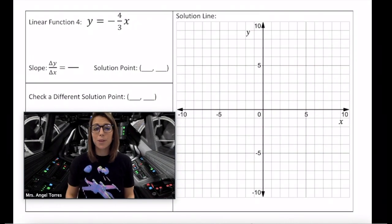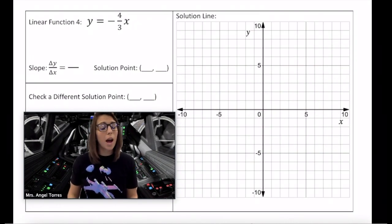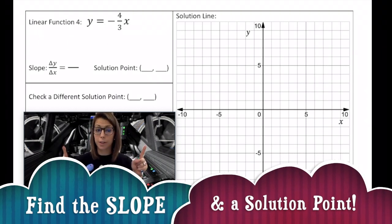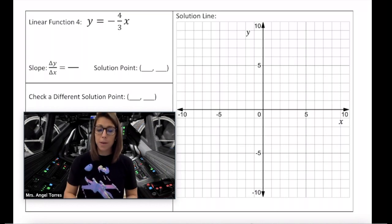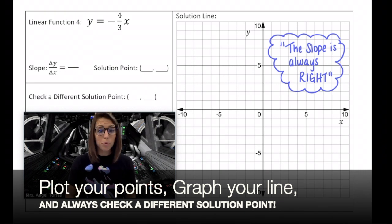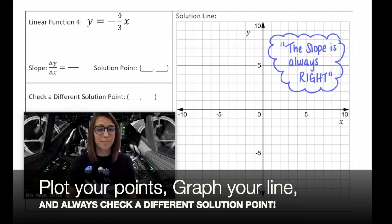Final example: we're given the linear function y equals negative four-thirds x. Identify the slope and a solution point first. Then bring that information over to your graph, always remembering that the slope is always right. Plot your points, graph your line, and when you're done, check a solution point. Great job, young math Padawans. Your teacher is going to go over that example with you when you return to class. That's it for today's lesson, and I will see you next time.